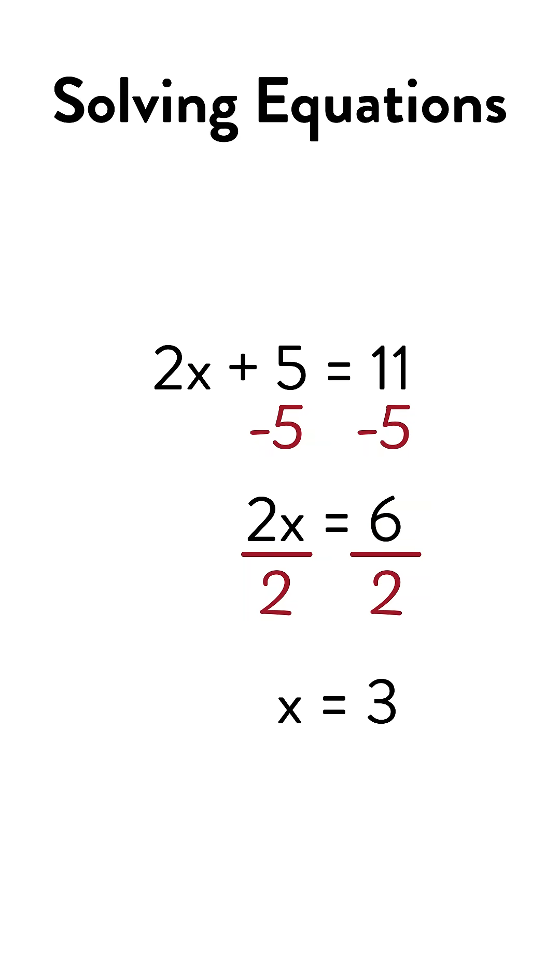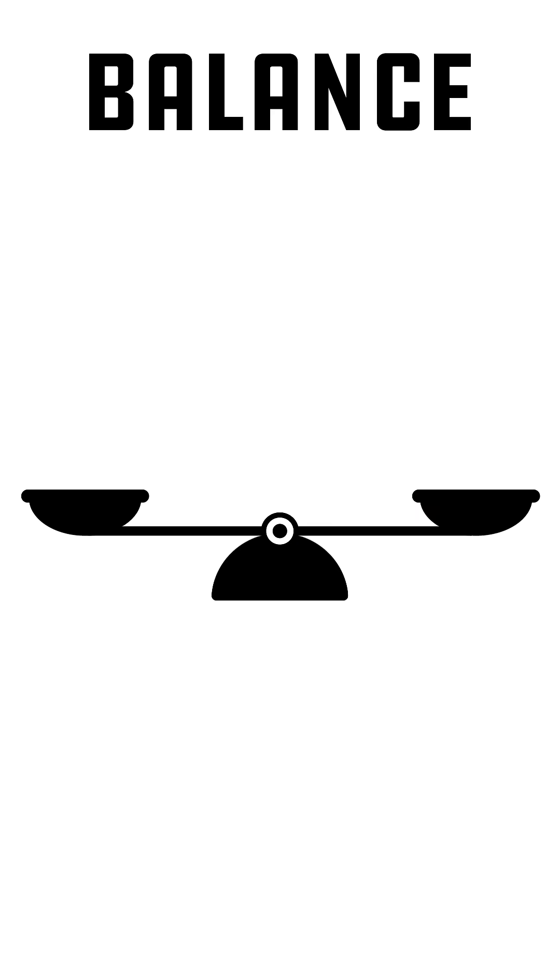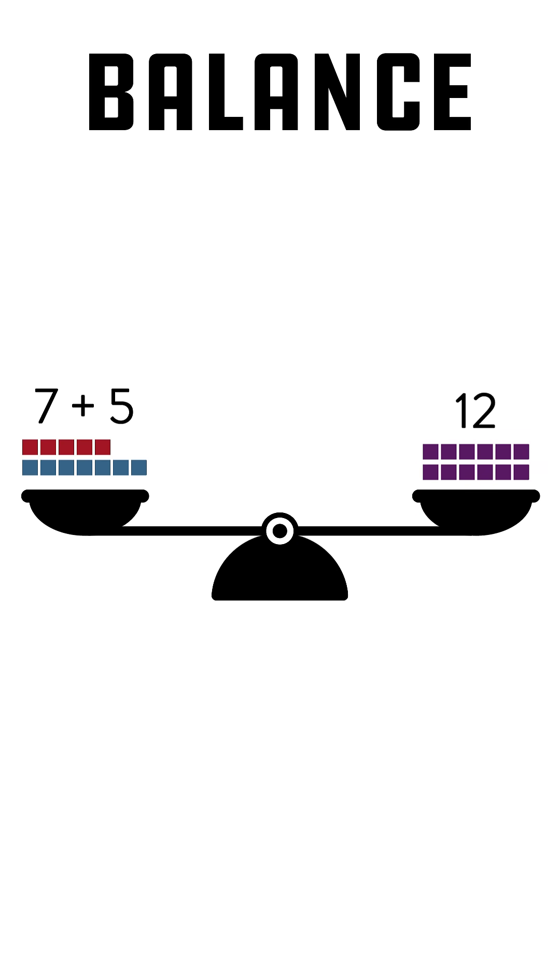Did you know solving equations actually starts in kindergarten? It begins with the idea of balance. For example, in this scale, 7 plus 5 is on one side and 12 is on the other.